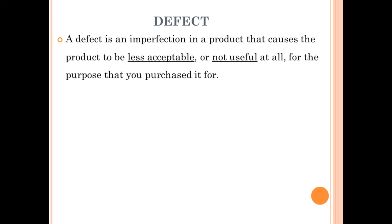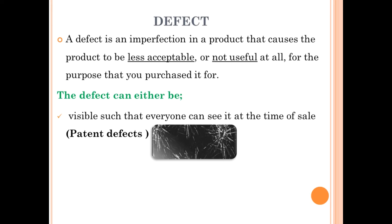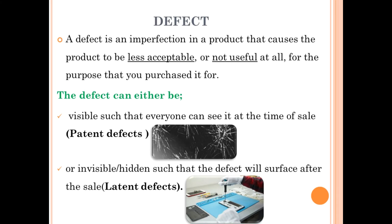What is a defect? A defect is an imperfection in a product that causes the product to be less acceptable or not useful at all. The defect can be either visible — such that everyone can see it at the time of sale — those are patent defects — or it can be invisible or hidden, such that the defect will only surface after the sale; those are latent defects.